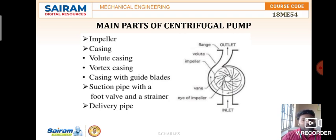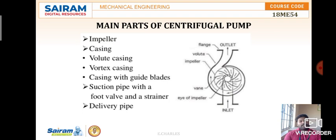The suction pipe with a foot valve and strainer is immersed in the well or ground level where water is to be lifted. The strainer arrests sediment and dust particles so that only clean water flows into the impeller. The delivery pipe carries the high-pressure water to the overhead tank or destination, where it is discharged.